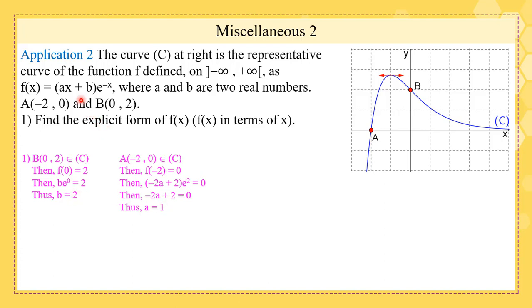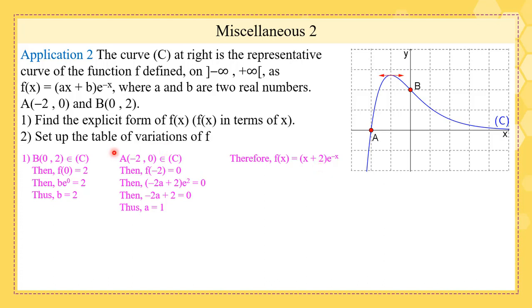Now that b = 2 and a = 1, we replace them to get the explicit form: f(x) = (x + 2)e⁻ˣ.